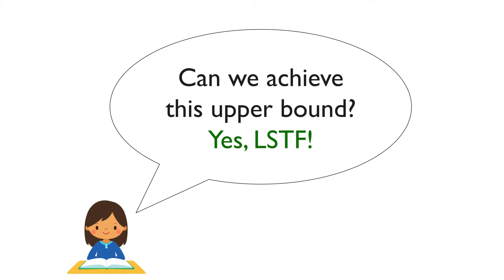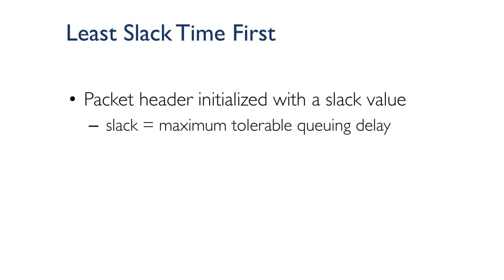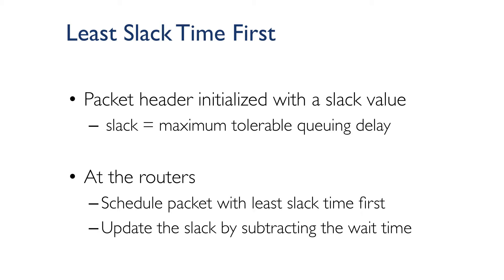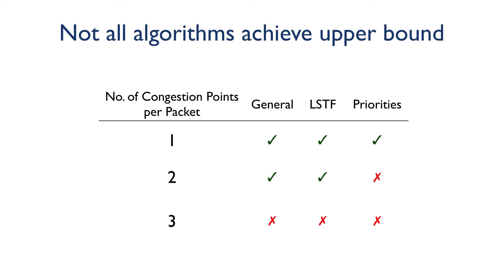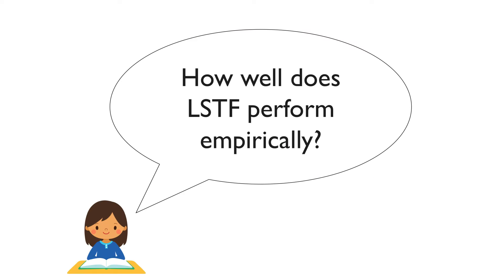So this gives us an upper bound in terms of the number of congestion points a scheduling algorithm can handle. The next question is: can we achieve this upper bound? The answer is yes. The classical Least Slack Time First algorithm — LSTF — can indeed achieve this upper bound. In LSTF, we initialize the header of every packet with a slack value indicating the maximum queuing delay the packet is willing to tolerate. The router schedules the packet with the least slack time first, and updates the slack of every packet by subtracting the duration of time it waited at the router. By contrast, simple priority scheduling can only replay schedules with one congestion point per packet.